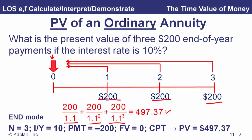Again, we're operating in end mode, with payments at the end of each of the three periods. Our payment is minus $200, and future value is zero — once we take that last $200 payment out, the balance left in the account is zero. So that's our calculator solution.